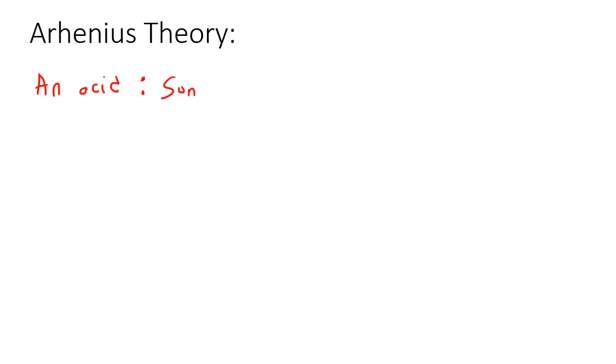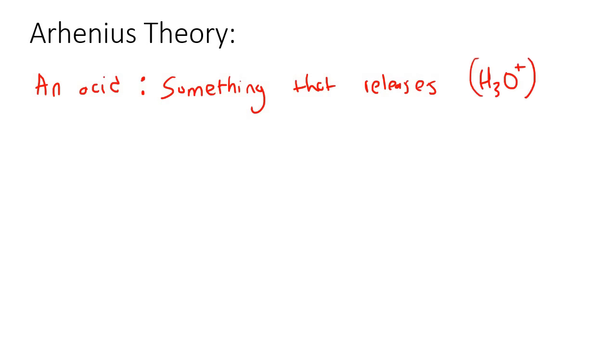Arrhenius was the first person who was able to come up with a decent definition of an acid. What Arrhenius said was that an acid is something that releases H3O+. Your teacher might use H+ instead. But the important part is: in water.